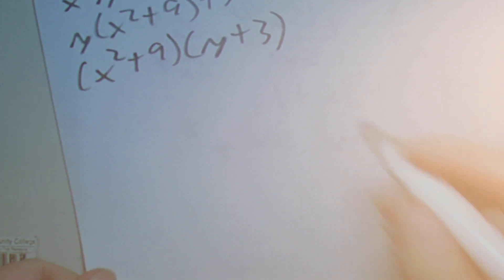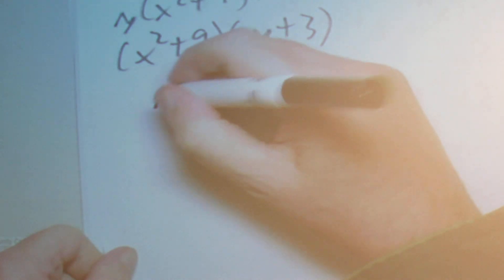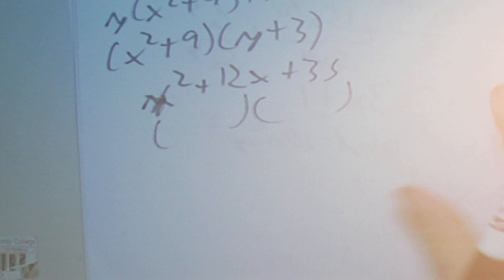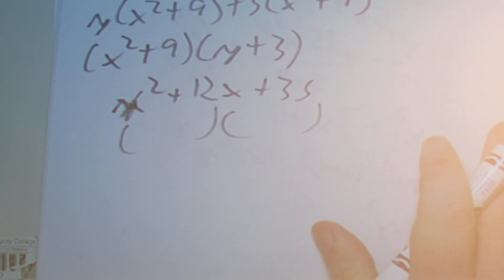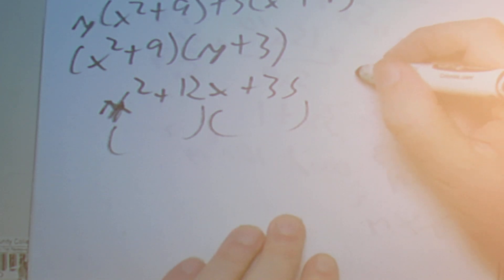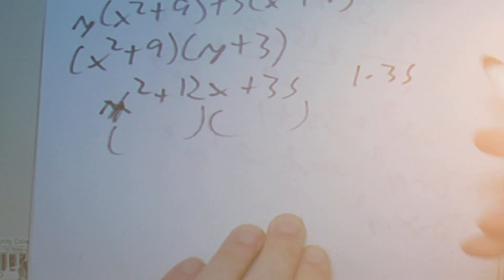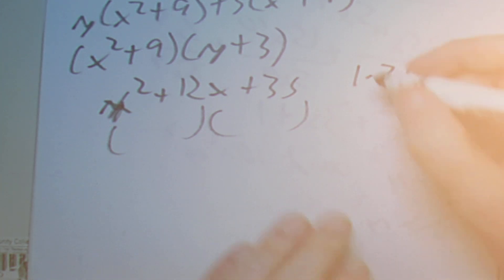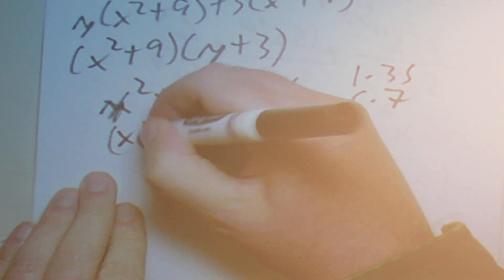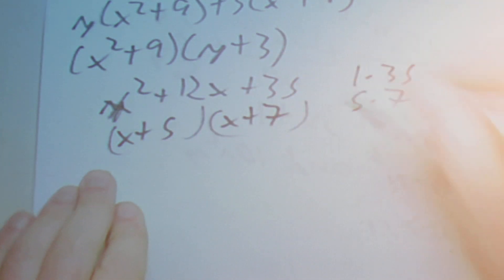Next, we're going to factor a trinomial: x squared plus 12x plus 35. We need two numbers that multiply to 35 and add to 12. Our choices are 1 and 35, and 5 and 7. The only pair that adds up to 12 is 5 and 7, so we get x plus 5 times x plus 7.